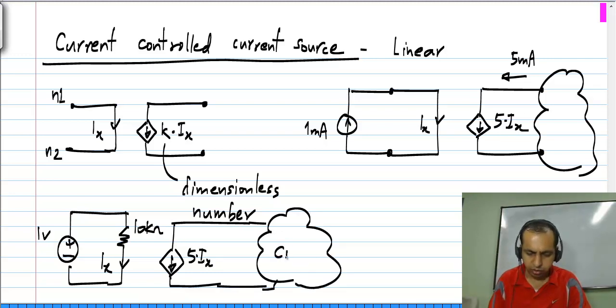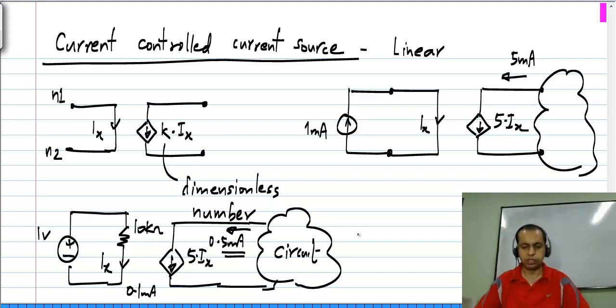Because Ix equals 0.1 milliamps, this causes 0.5 milliamps to flow through the circuit.